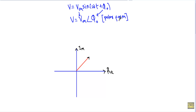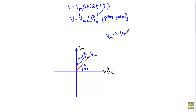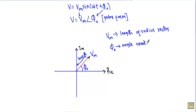We can represent the polar form of the phasor in a two-dimensional axis, with the real value on the x-axis and the imaginary value on the y-axis. If a point is plotted and we join the origin to that point, we get the magnitude of the phasor, which indicates the length of the radius vector. The angle φ₀ indicates the angle produced with the positive real axis.